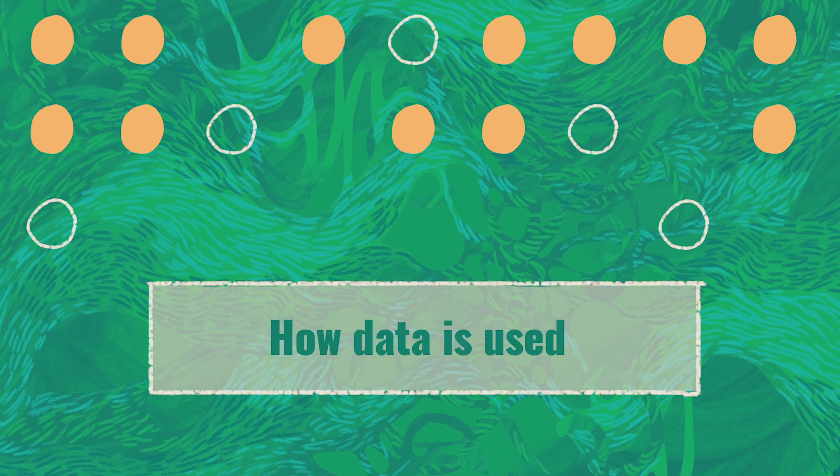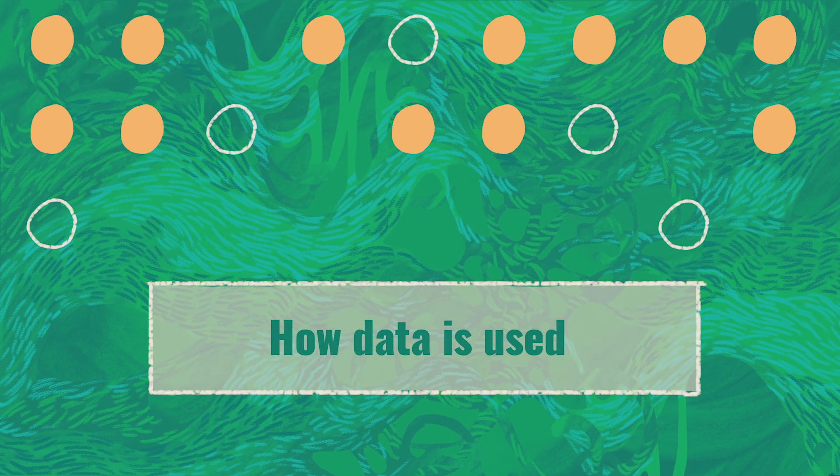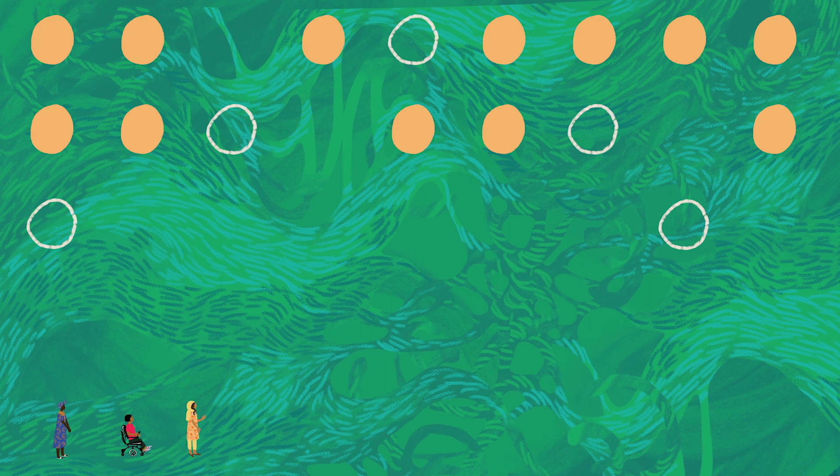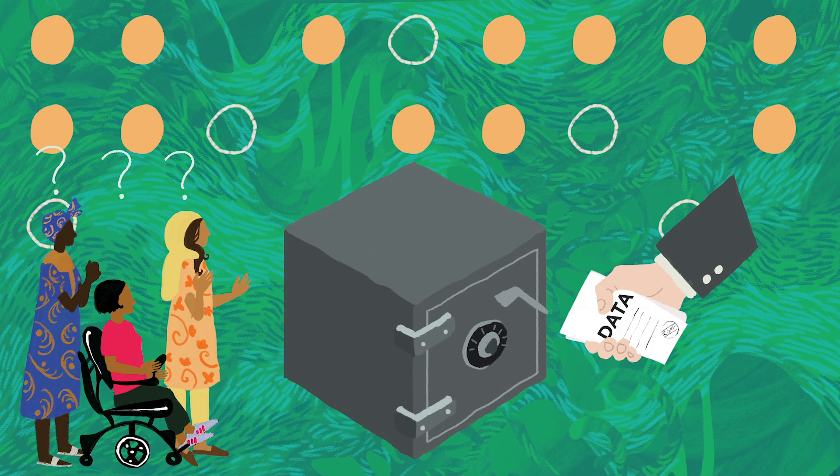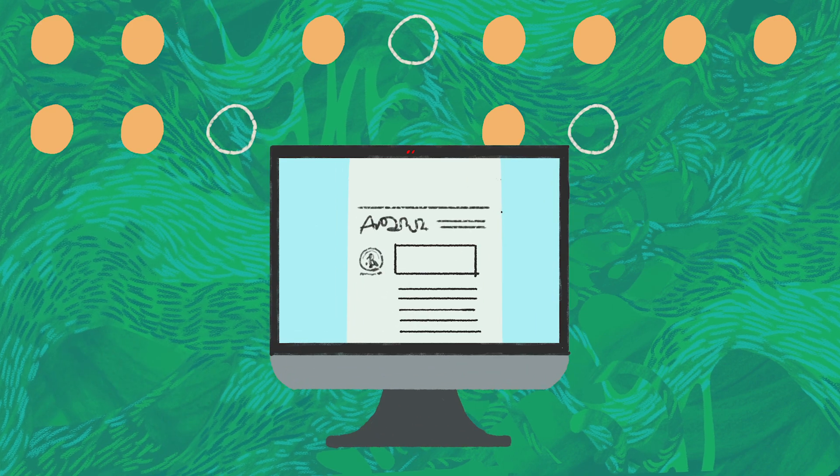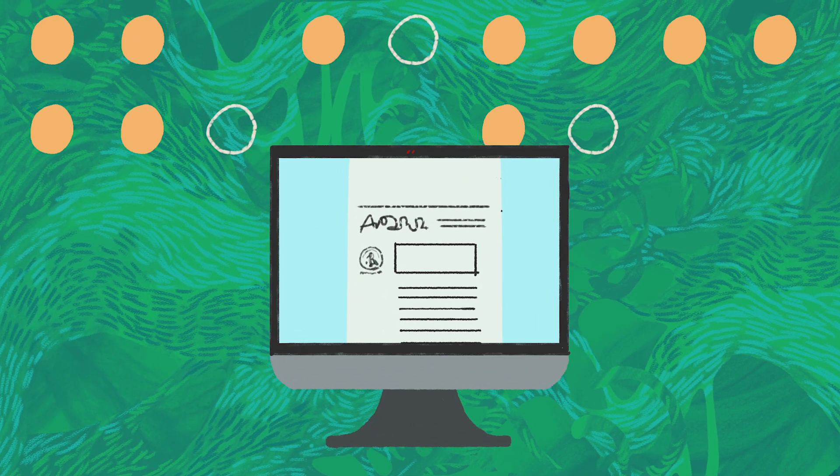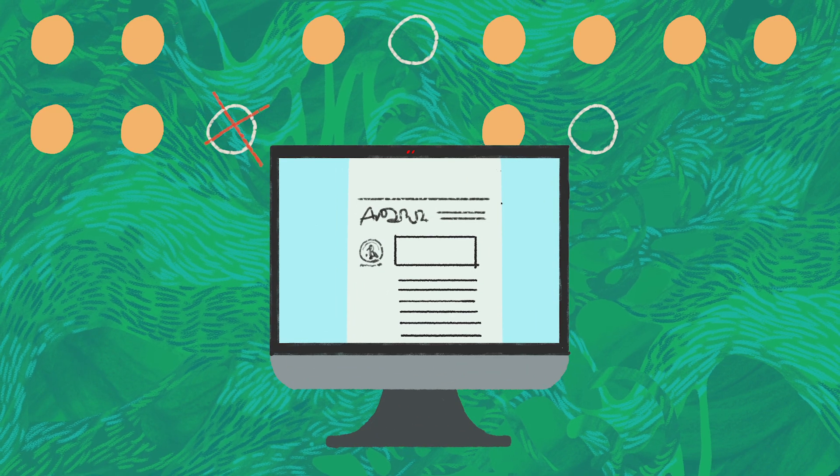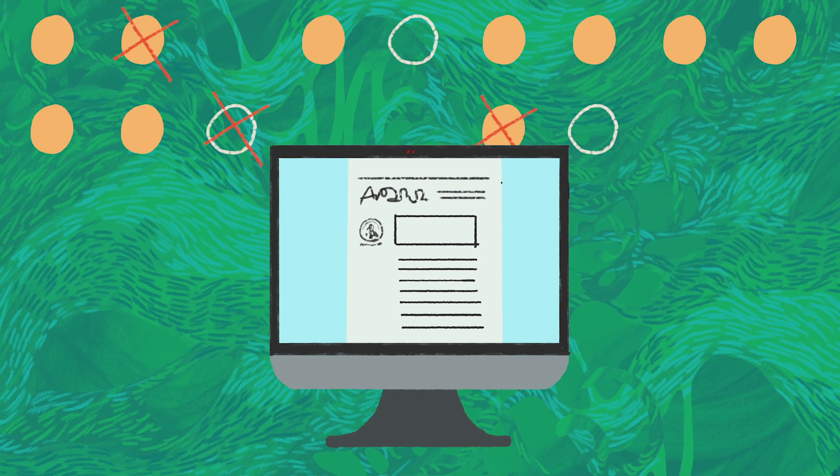Exclusion also happens in the choices about how data is used when governments and companies conceal important information that people need to participate in decisions that affect them, or they use personal data to profile, exclude, or punish people through the use of algorithms and automated systems.